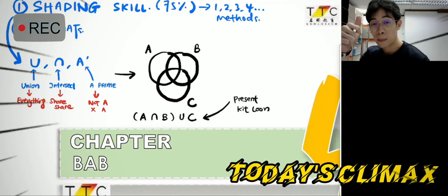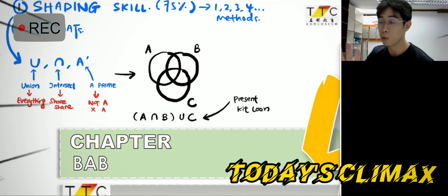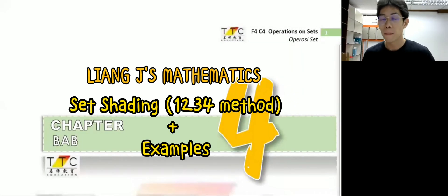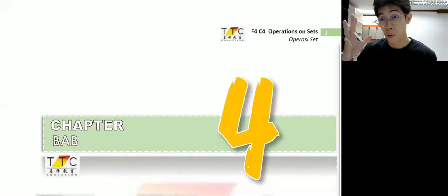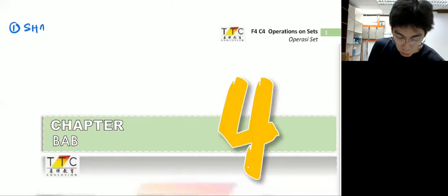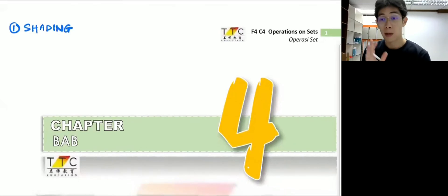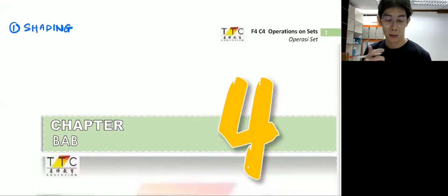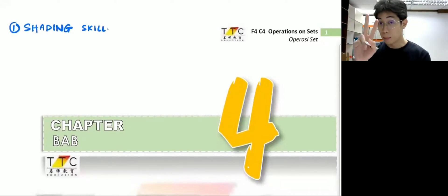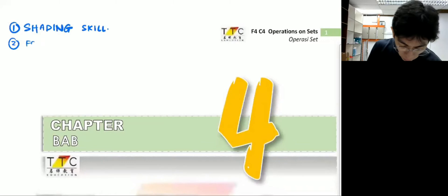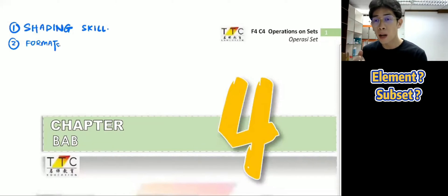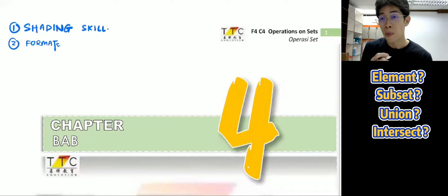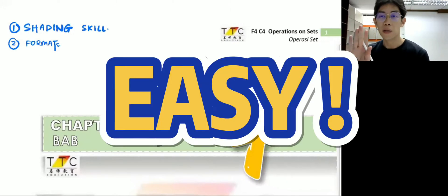Okay, I'm gonna show students how to use this method. Let's start — everyone, Chapter 4. So I categorize for you nicely. Number one: shading skill — very important. Number two: you need to know formats — how to present your element. What is the subset symbol? What is union? What is intersect? What is the complement of a set?